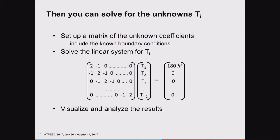Here is each T_i—the ones that you don't know. Your boundary conditions are represented in the right-hand side. Your coefficients for how those T_i relate to each other are represented in this linear system. It's a tri-diagonal system—the famous 2, minus 1 matrix that we all start with in numerical analysis. You can solve that using a variety of techniques, and when you're done, you visualize and analyze the results. That's solving computational science and engineering problems 101.